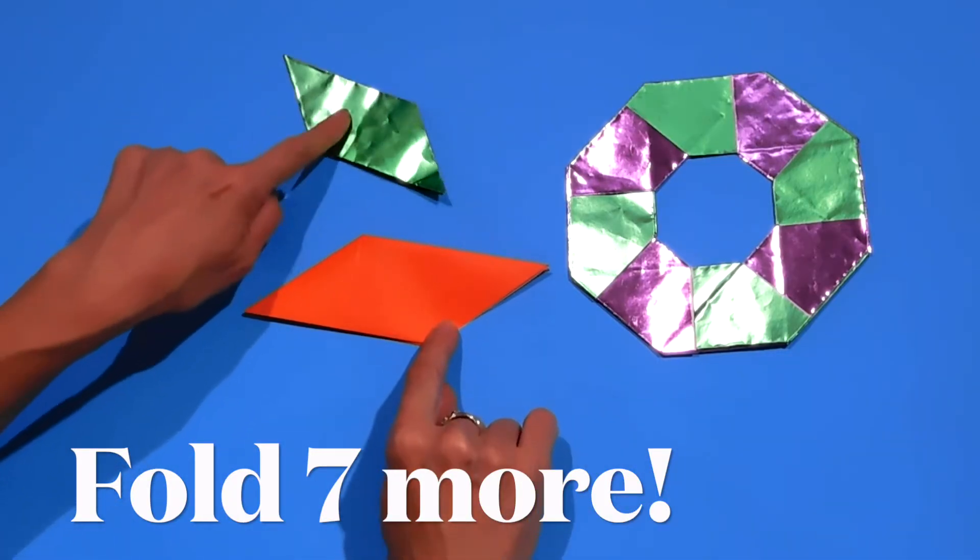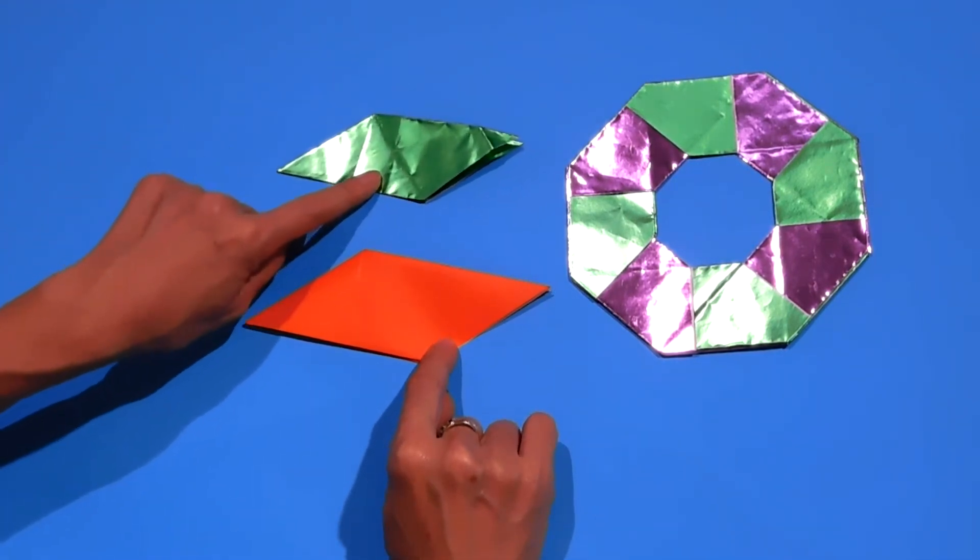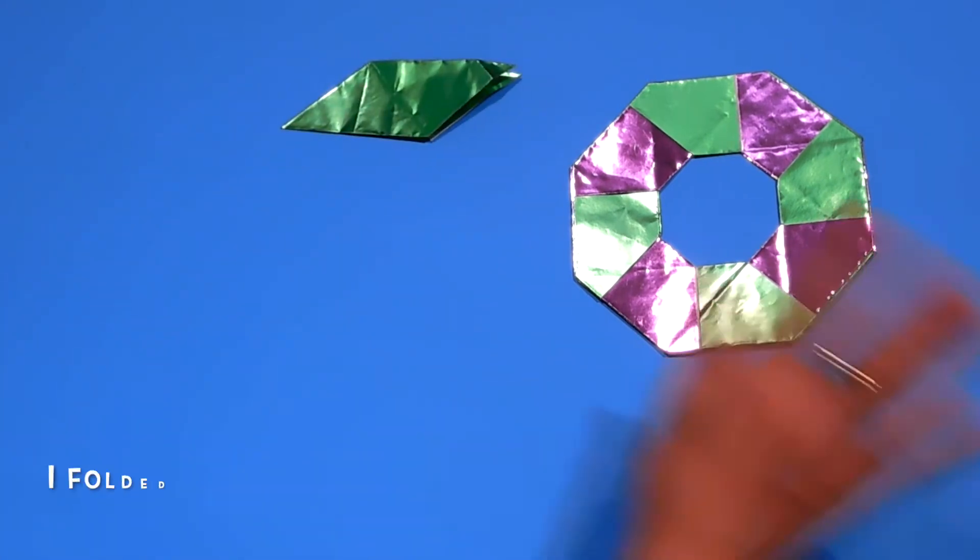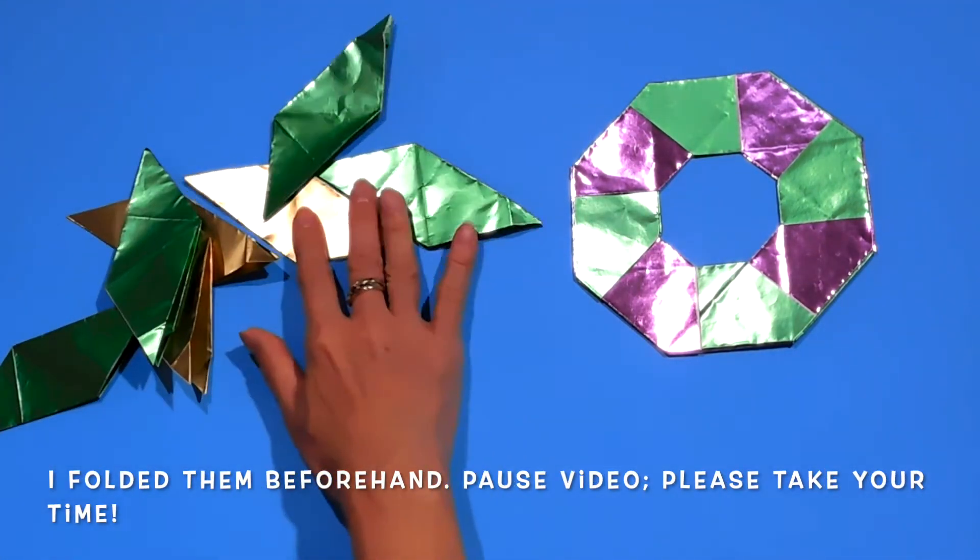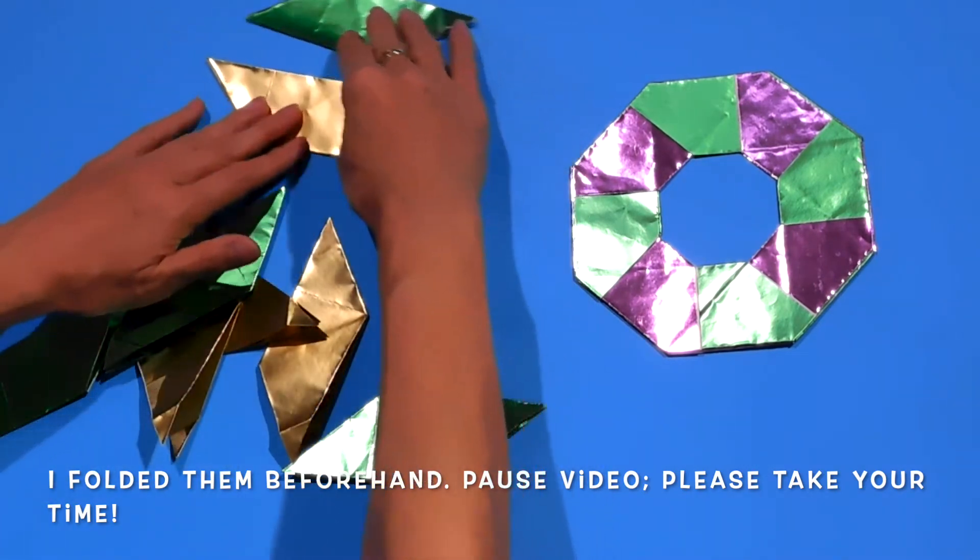This one is smaller because I started out with a smaller square. So please don't get confused. What it is, is there are eight of them. They are all the same size.